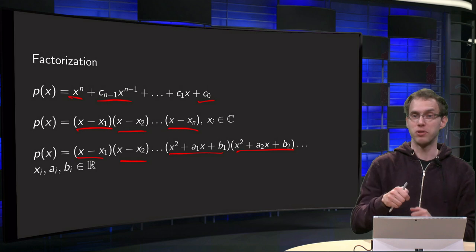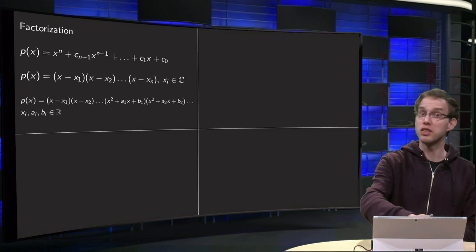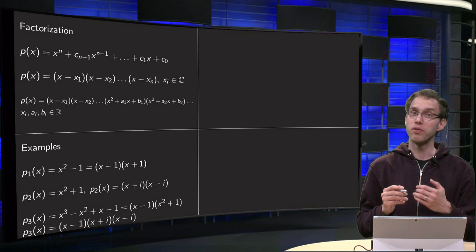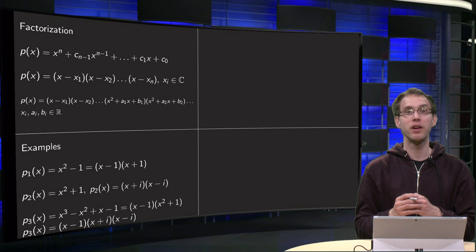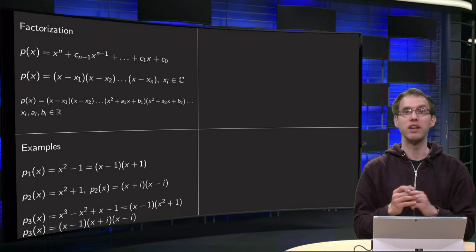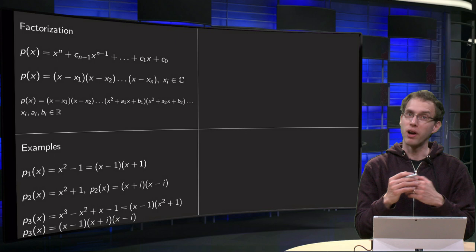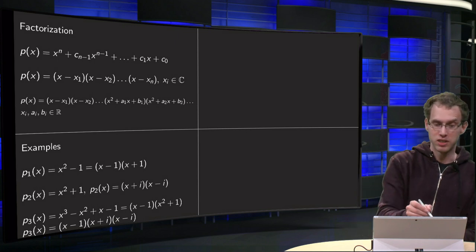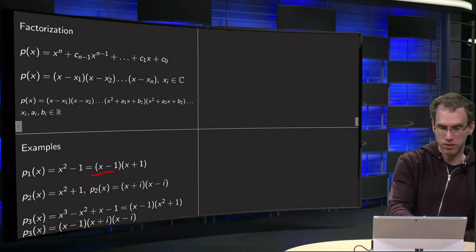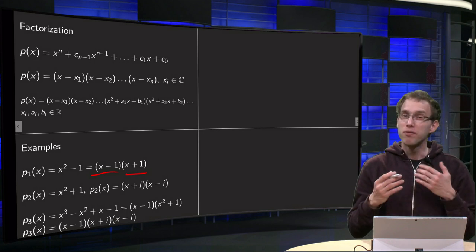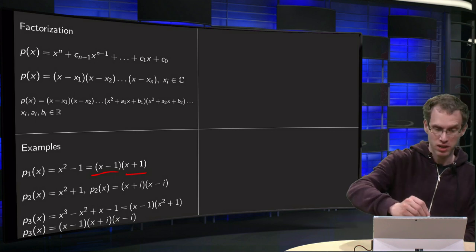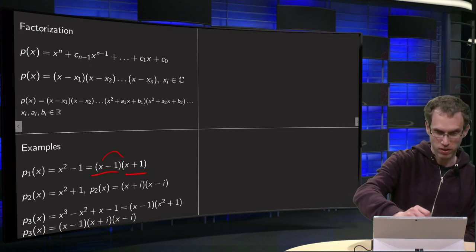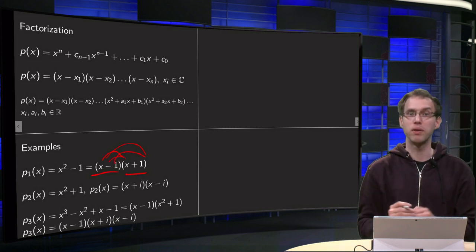Let's see some easy examples. We start with the polynomial x² − 1: coefficient 1, no linear term, and −1 as c₀. You know how to factorize it: x² − 1 = (x − 1)(x + 1). Factorizing may be hard, but checking is always easy because you can multiply out the brackets. You get x² + x − x canceling out, minus 1 — so indeed x² − 1.